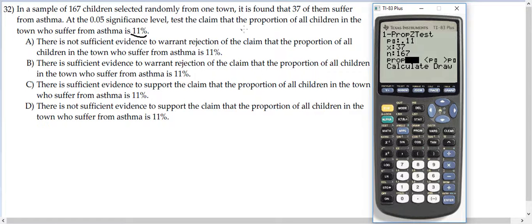And it says test the claim that the proportion is 11%. So we want to test that it is equal. The opposite of that is not equal. So we do not equal. We're going to try to prove that it's not. So we leave it at not equal and do calculate.